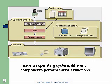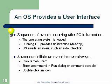There is a shell between the user and the kernel, and the kernel works directly with the hardware. The OS provides a user interface. In the sequence of events after the PC is turned on, the operating system is loaded. The running OS provides an interface — a desktop of some kind — for the user to interact with. The OS then awaits an event, such as a double-click of your mouse.